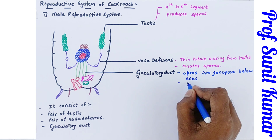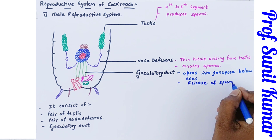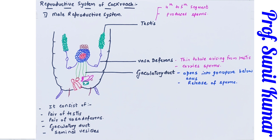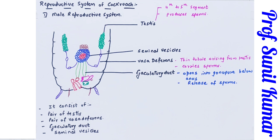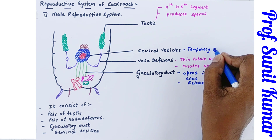Then we have the seminal vesicle — the red colored portion I am labeling. The seminal vesicle temporarily stores the sperm and nourishes the sperm. Its role here is the same as in the human reproductive system. After the seminal vesicle, the next important part is the male gonopore.